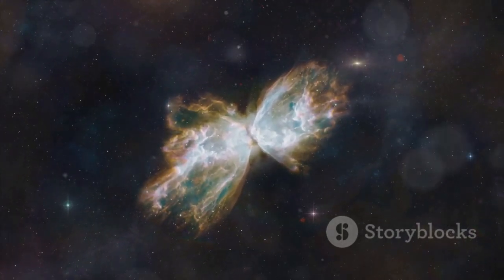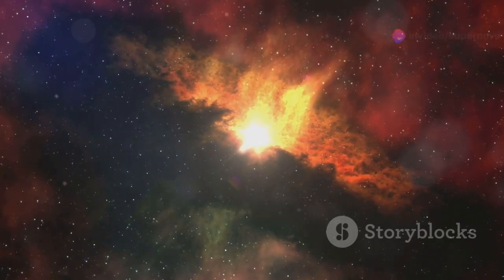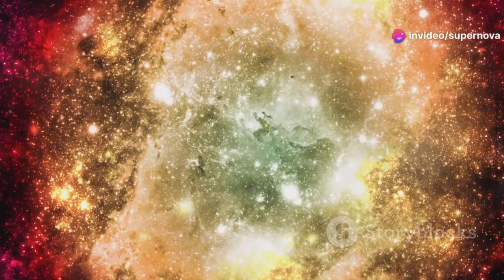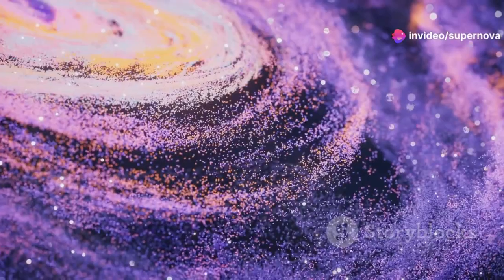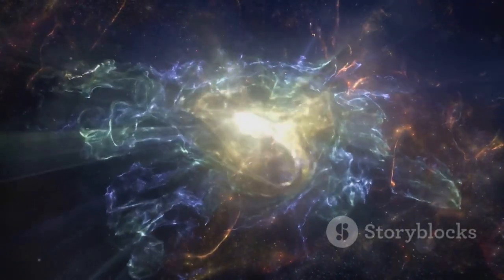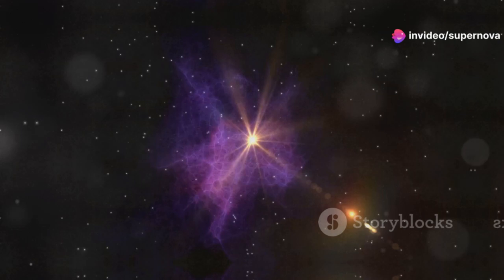The Butterfly Nebula: Wings of Gas and Dust. As stars like our sun die, they shed gas and dust into space. This creates stunning planetary nebulae. The Butterfly Nebula is one such example. Its symmetrical wings resemble a celestial butterfly, illuminated by a dying star at its center. This white dwarf emits ultraviolet radiation making the nebula glow. A reminder of beauty from a star's death.